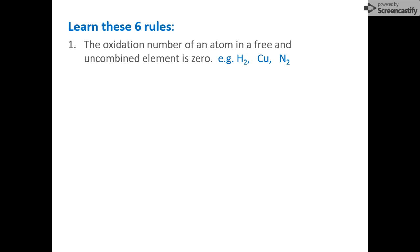The first rule is that the oxidation number of an atom in a free and uncombined element is zero. For example, hydrogen, copper, nitrogen — these are all elements not combined with any other element, so they're considered free elements. The oxidation number for hydrogen in hydrogen gas is zero.